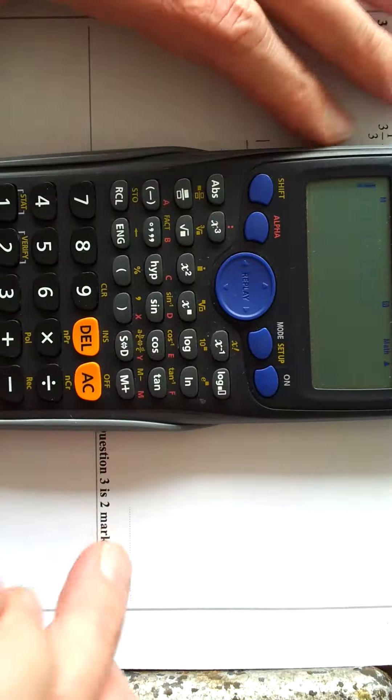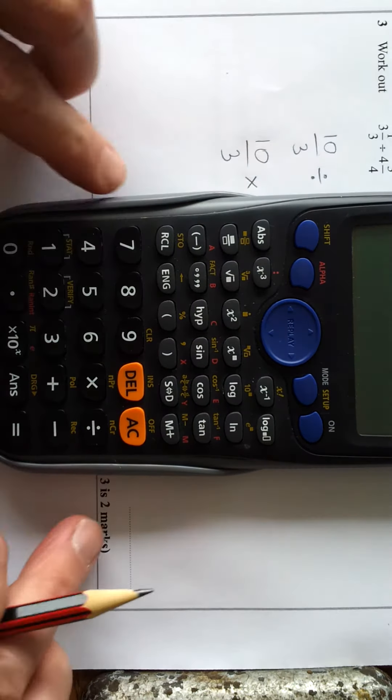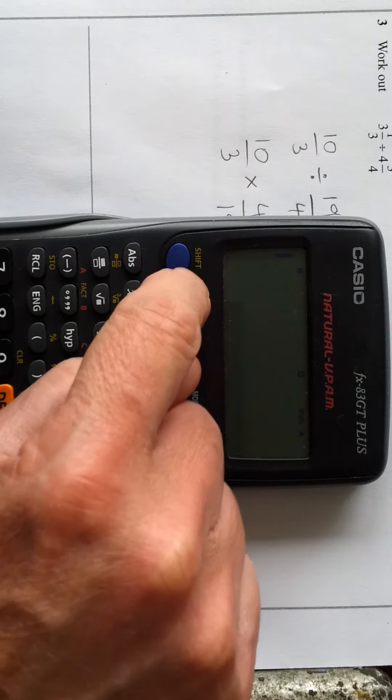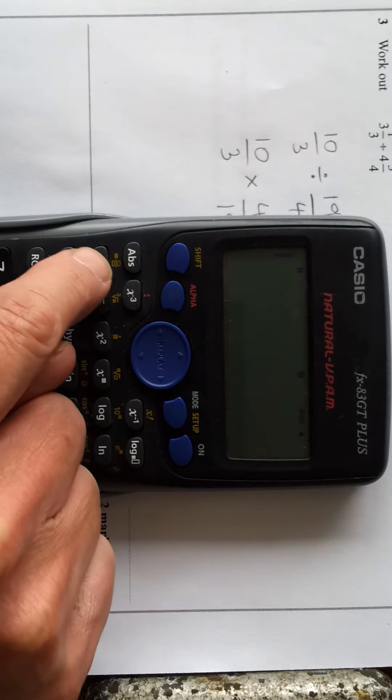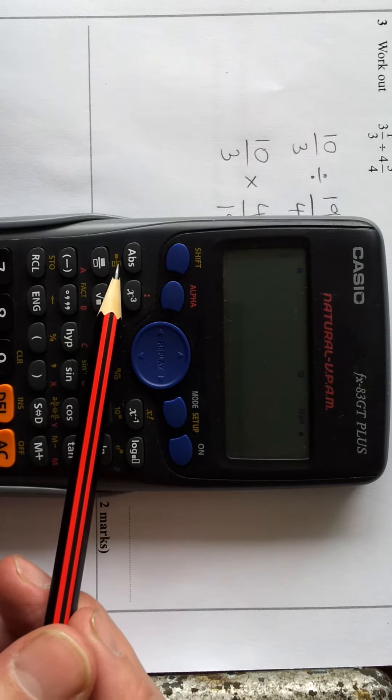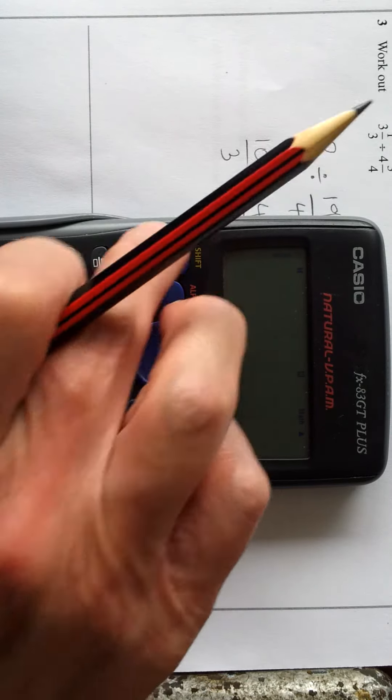Okay, because this is a calculator paper, we can do the whole thing on the calculator. So this is how we do it using the calculator. First of all, the fraction button is here. Above this fraction button is one for mixed numbers, so press shift and this part here.